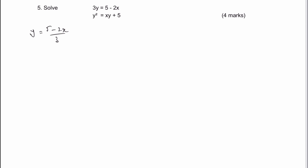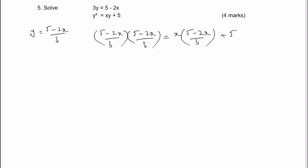Then it's a case of substituting that into the second equation. What I'm going to get is (five minus two x) all divided by three, and that's going to be squared — so it's (five minus two x) all divided by three again — and that's equal to x multiplied by (five minus two x) all divided by three, plus five. So what we need to do now is solve this for x.